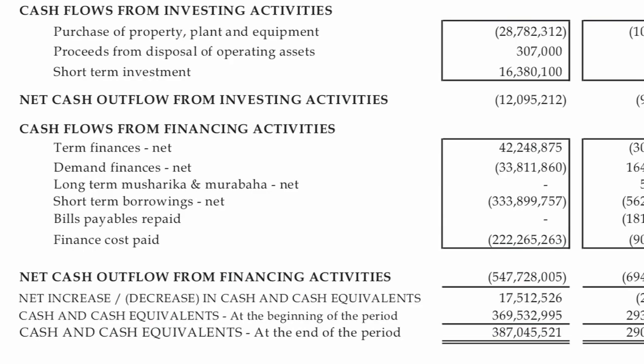The total of these three sections will be your net increase or decrease in cash for the period. You add this to the cash at the beginning of the period to arrive at the cash at the end of the period, which also will agree to the amount of cash on your balance sheet. So now you see all this detail for just one line item on the balance sheet.